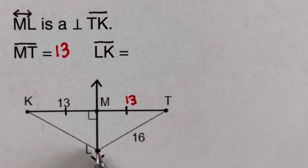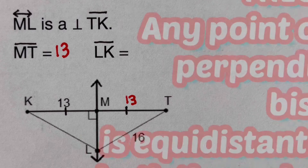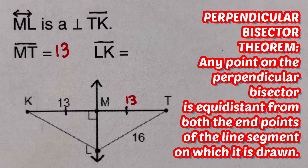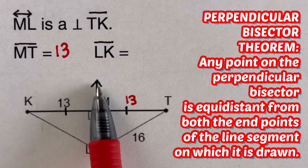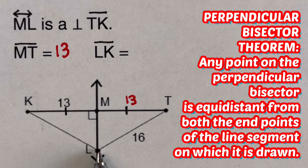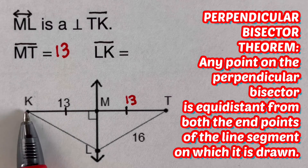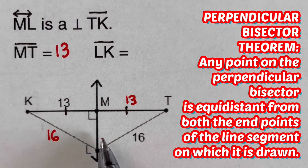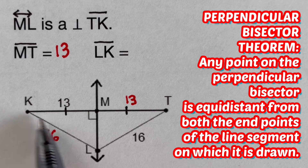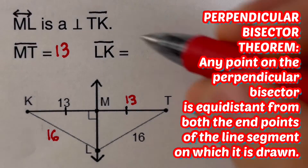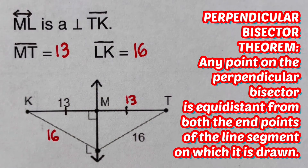Now we're looking for KL. By the perpendicular bisector theorem, any point on the perpendicular bisector is equidistant from both endpoints of the segment. Since point L is on the perpendicular bisector of TK, the distance from L to T equals the distance from L to K. Since LT is 16, then LK is also 16.